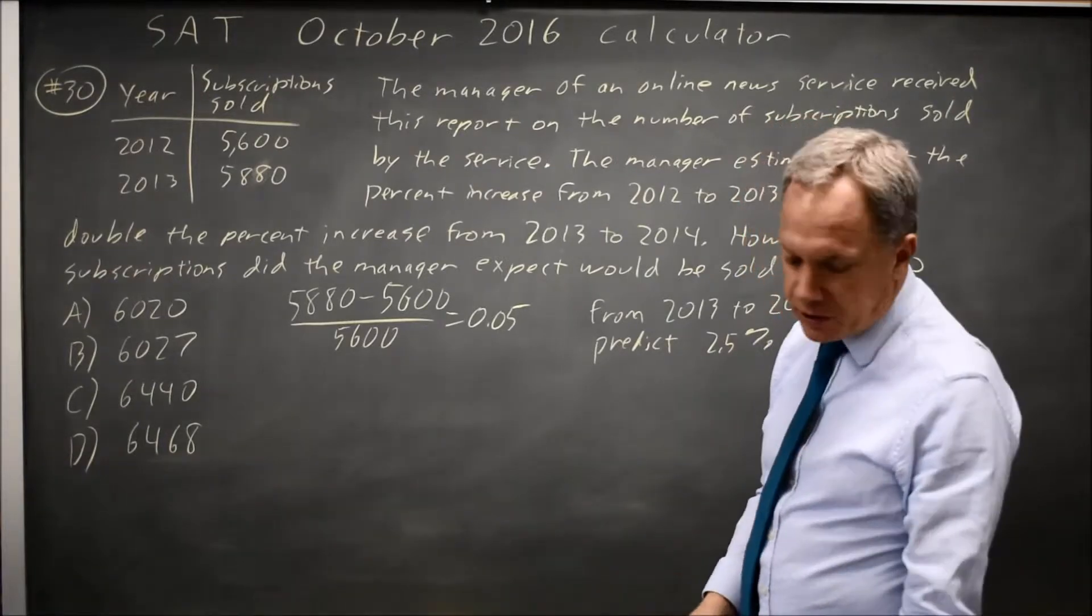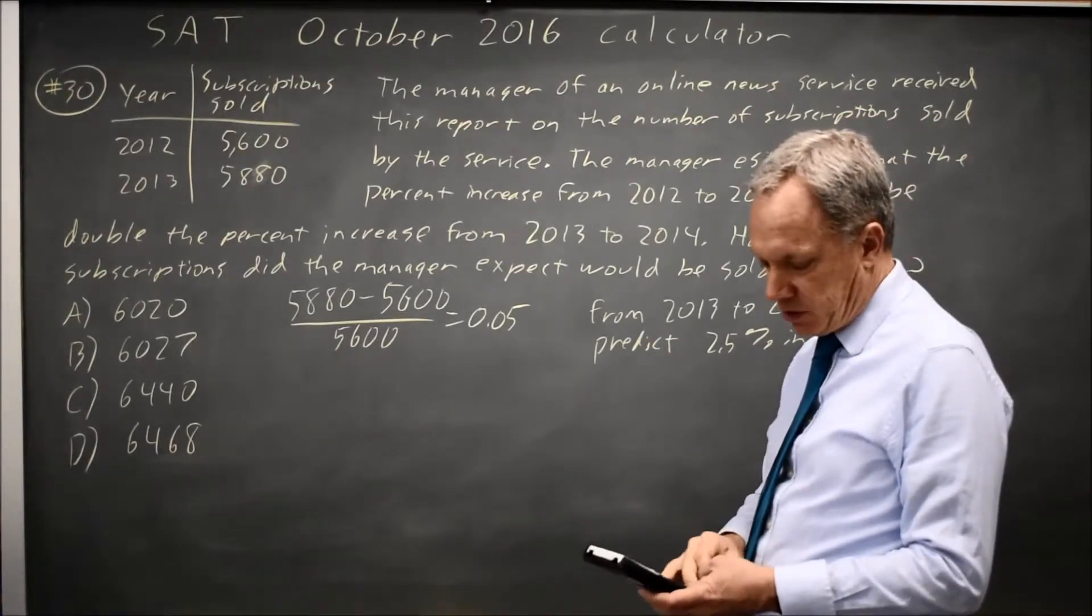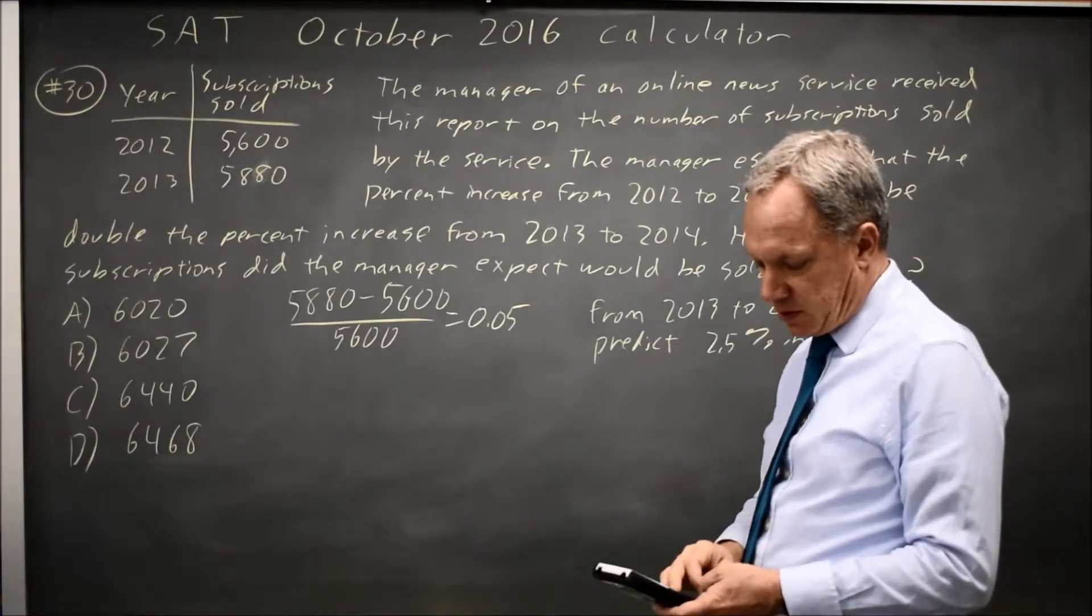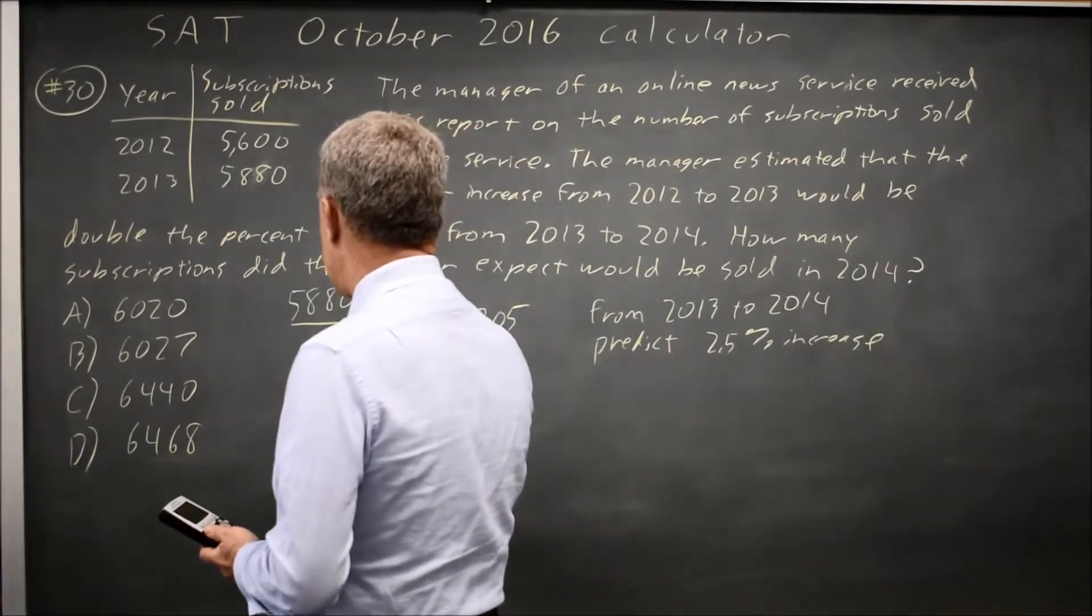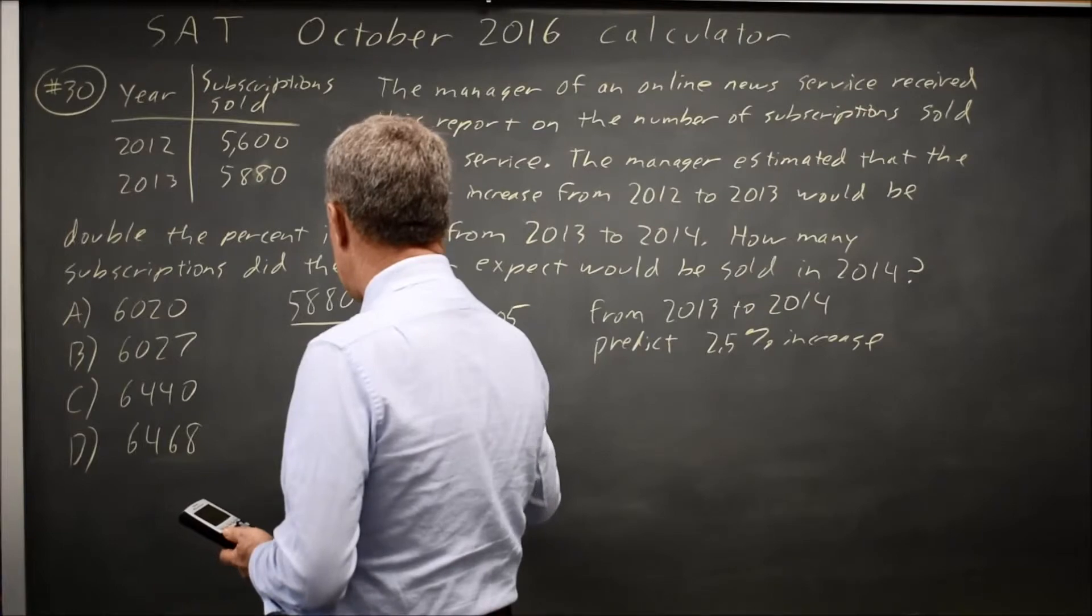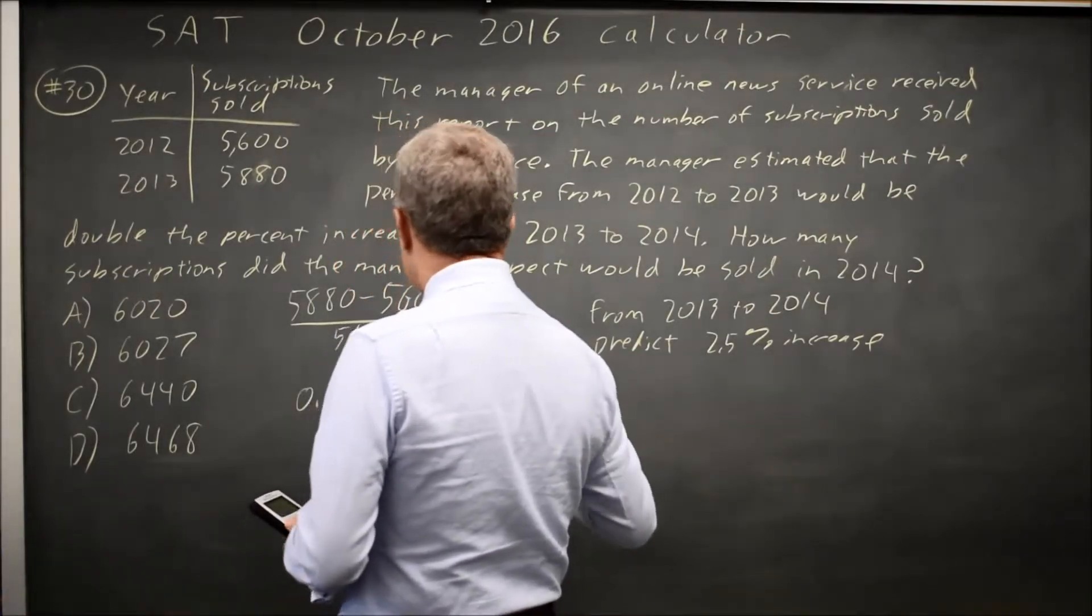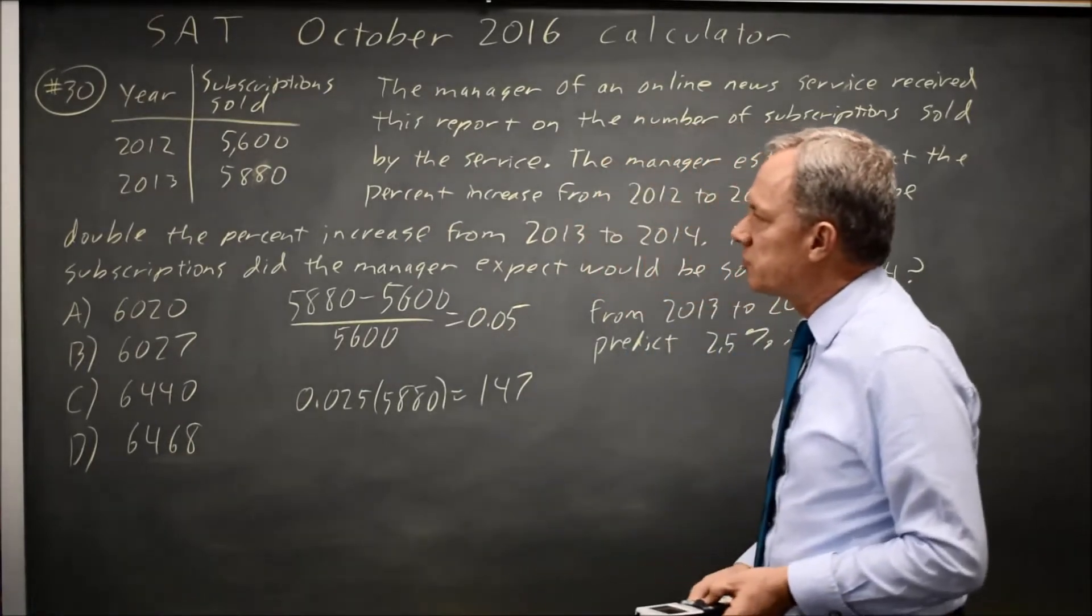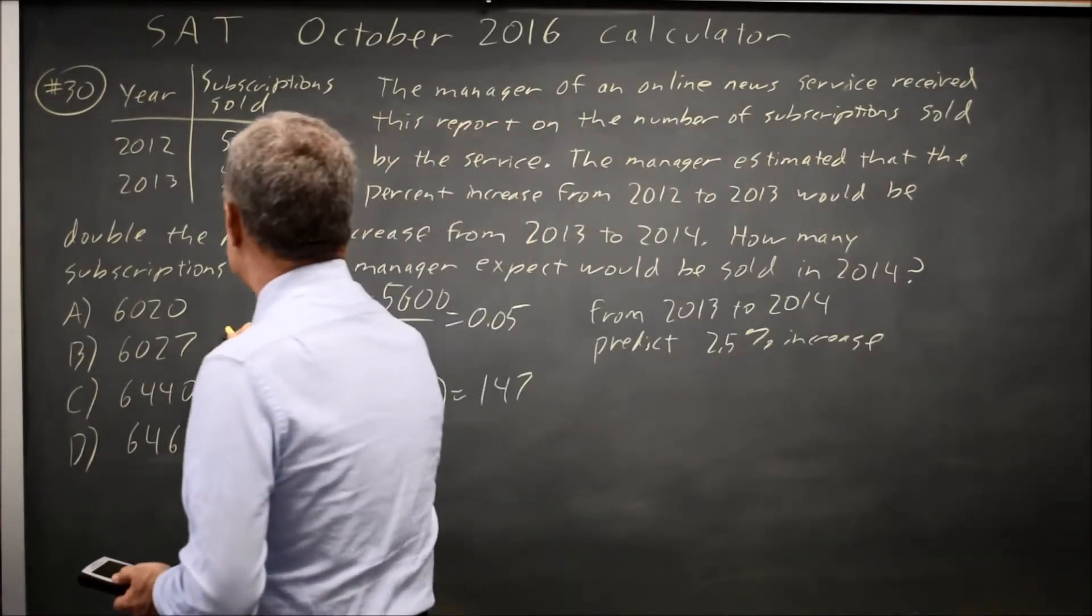So if we take 2.5% of 5880, .025 times 5880, that's 147. We predict we'll increase by 147 and 147 plus 5880 is 6027.